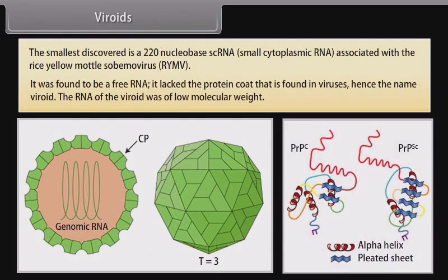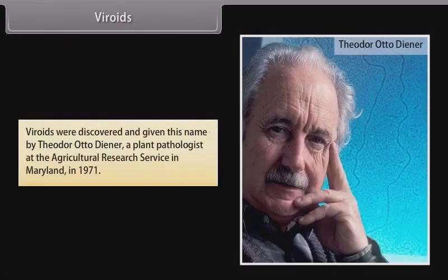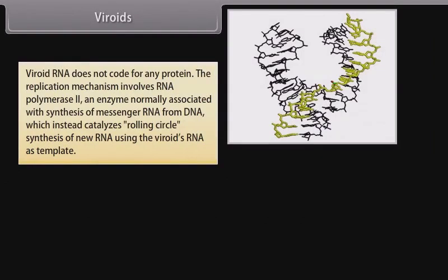It was found to be a free RNA. It lacked the protein coat found in viruses, hence the name viroid. The RNA of the viroid was of low molecular weight. Viroids were discovered and given this name by Theodor Otto Diener, a plant pathologist at the Agricultural Research Service in Maryland, in 1971. Viroid RNA does not code for any protein.